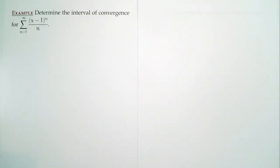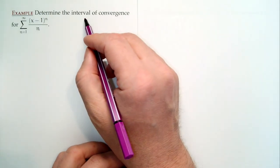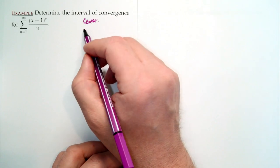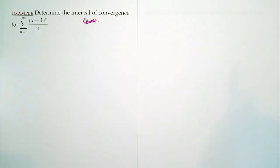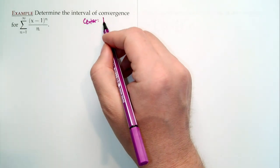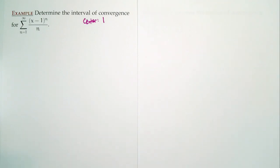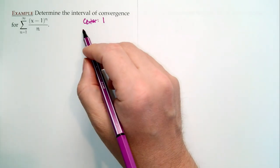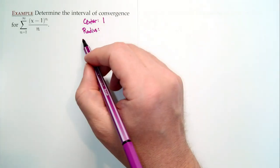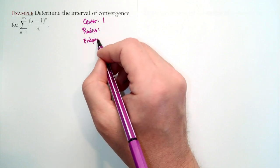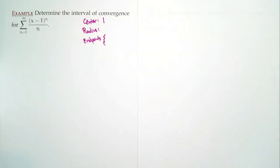Next example: determine the interval of convergence for the sum from 1 to infinity of (x minus 1) to the n divided by n. One thing that's different here is we have this (x minus 1) coming into play. Let's talk about our center. Where are we centered? Is it negative 1 or positive 1? Be careful — it's positive 1. One way to think about it: ask for which value of x, if I plug it in, would I get 0 out? Whatever the answer is, that's your center. If we plug in x equals 1, we get 0 out, so 1 is our center.